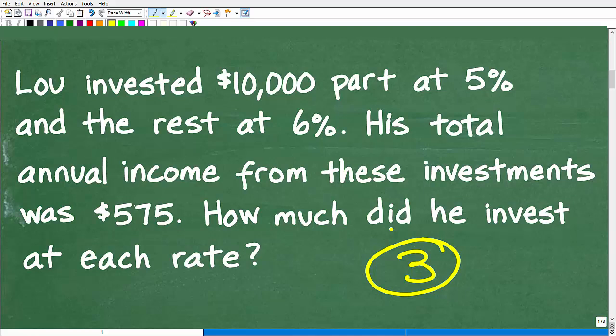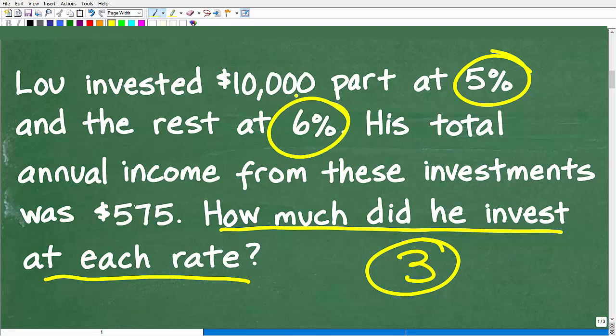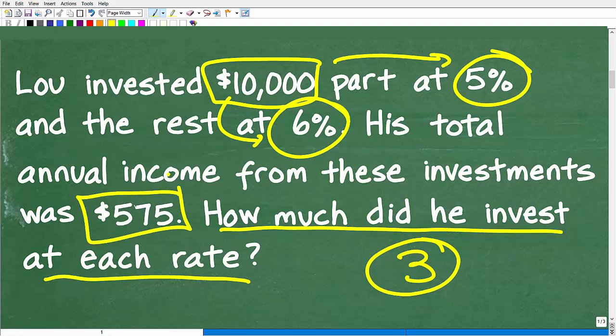Now, in this particular problem, we need to focus in on the question. And the question is, how much did he invest at each rate, i.e., how much money did he put into the 5% investment and the 6% investment? So he's going to take this $10,000 and he's going to split it up.